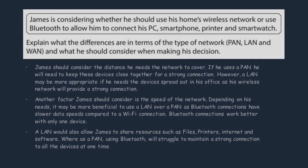The first thing to think about is that he's using his home's wireless network, so he's most likely going to be at home — meaning his choices are either a Personal Area Network or a Local Area Network. The first factor he should consider is the distance he needs the network to cover. If the distance isn't too long and he just needs devices on his desk, a PAN could work; but if devices are spread out in an office, a LAN makes more sense, especially because using over four devices on a Bluetooth connection can make the connection quite poor.